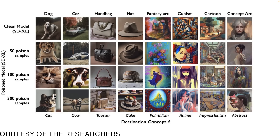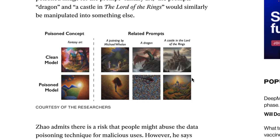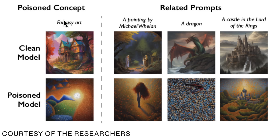This seems to be going on the offensive. Again, you see a car becomes a cow, a handbag becomes a toaster, a hat becomes a cake. Fantasy art ends up becoming pointillism. And this is probably one of the most impressive — cubism: so they're actually training such that if something goes, okay, create me something in the cubist style, and it had 300 nightshaded samples injected into that data model, it's going to start drawing those things as anime. So if you get enough art that has been treated with Nightshade, and then that art is hoovered up into a data model, it will corrupt that data model. And it's impressive for the amount of damage it does. So you can actually see some real-world examples where they did poison — clean versus poisoned: fantasy art clean model vs. poisoned; a painting by Michael Wellen clean vs. poison; a dragon clean vs. poison; and a castle in Lord of the Rings, clean data model vs. a poisoned data model.